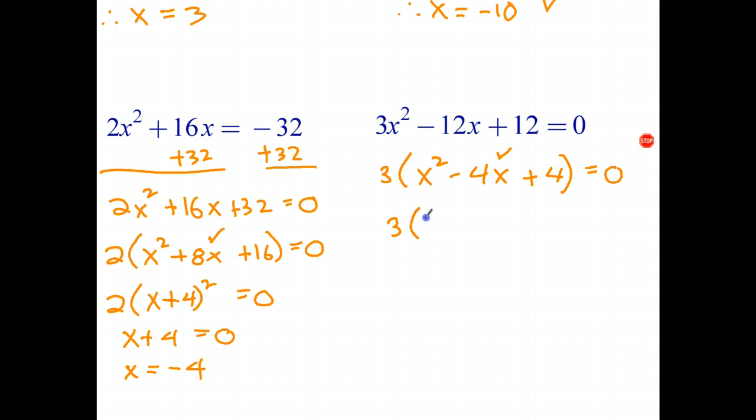And therefore, that can be factorized or written in factorized form as x minus two all squared equals zero. Now, three can't equal zero, but x minus two can equal zero. So that's the only solution to this equation. And therefore, the solution to the original equation is x equals two.